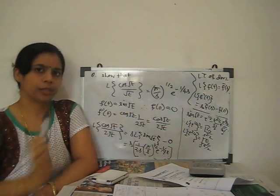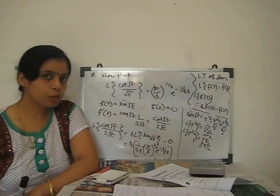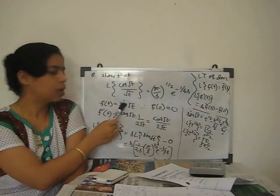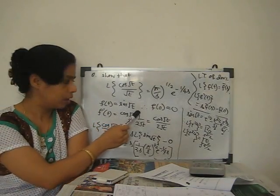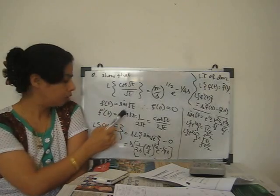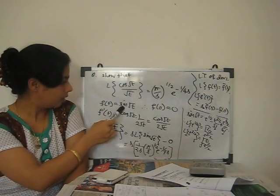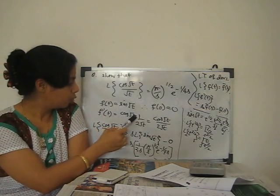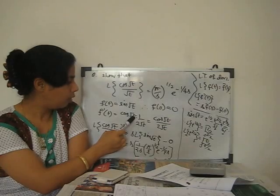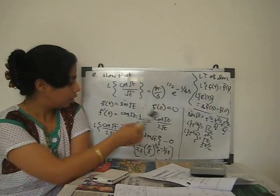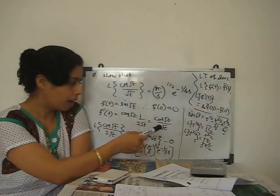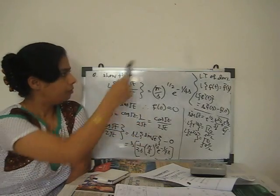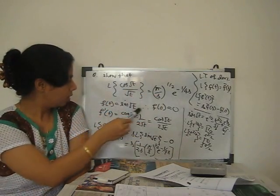If our function f(t) = sin√t, then the derivative of sin√t, differentiating once with respect to t, gives cos√t multiplied by the derivative of √t, which is 1/(2√t). So f'(t) = cos√t / (2√t).